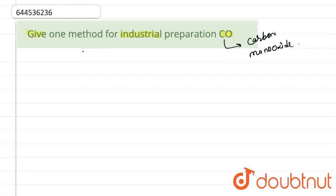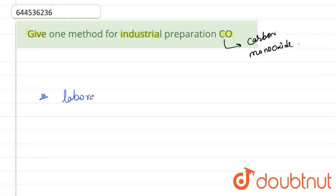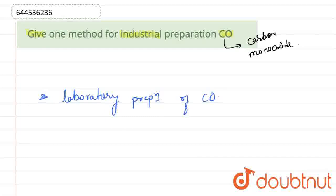We have to give one method for the industrial preparation of CO. For that, we can write the laboratory preparation of carbon monoxide. Here, what happens is that formic acid is dehydrated with concentrated sulfuric acid at 373 Kelvin.